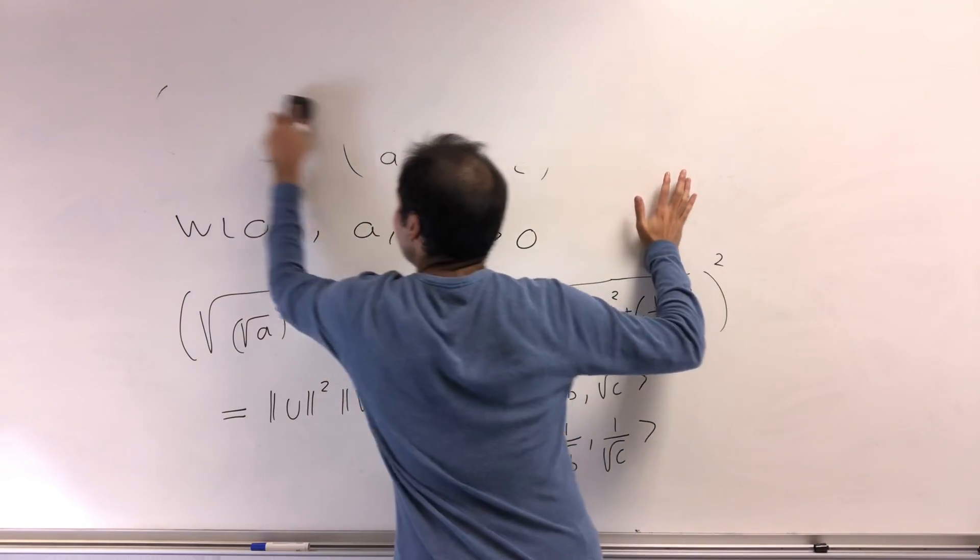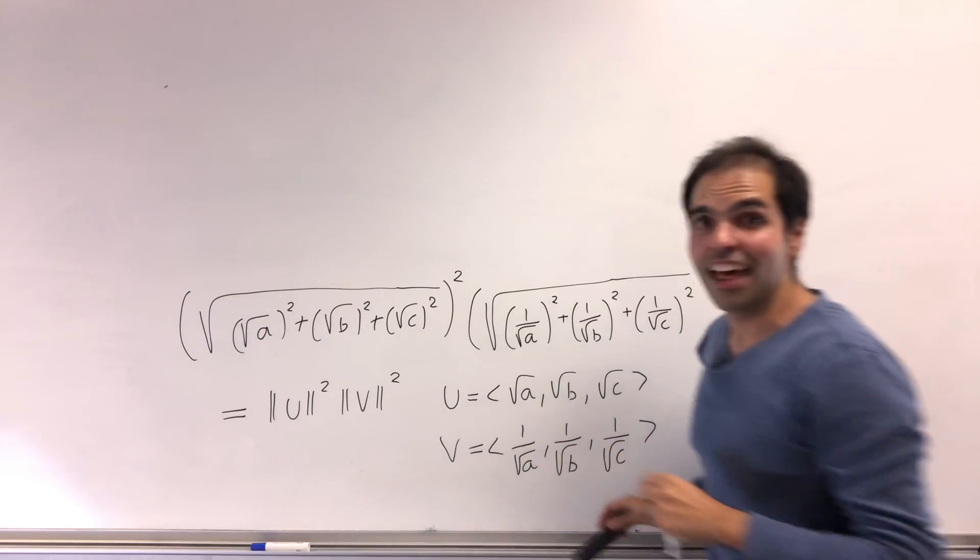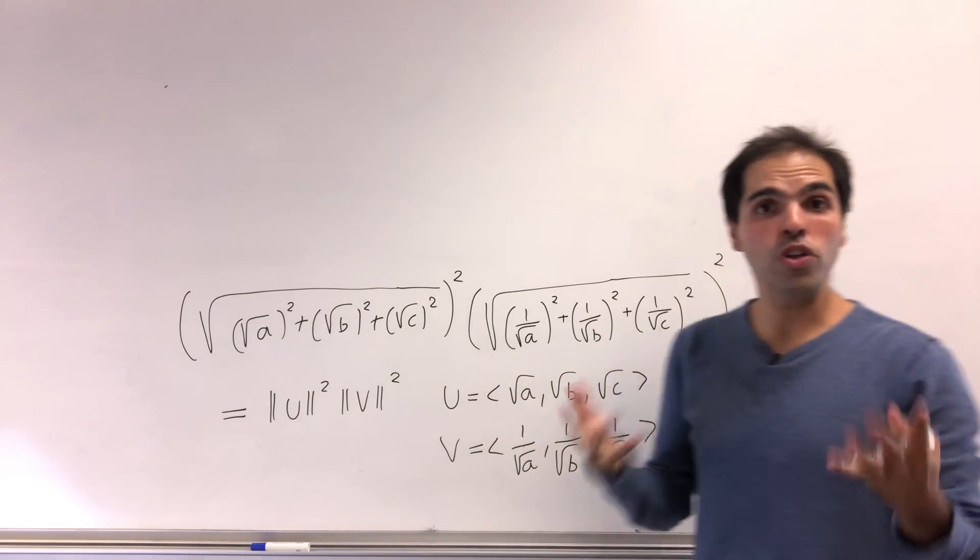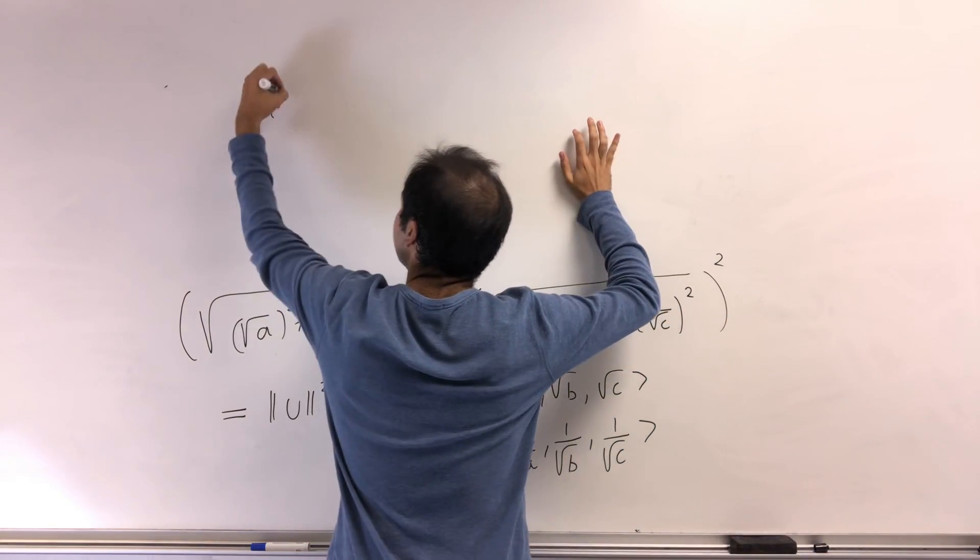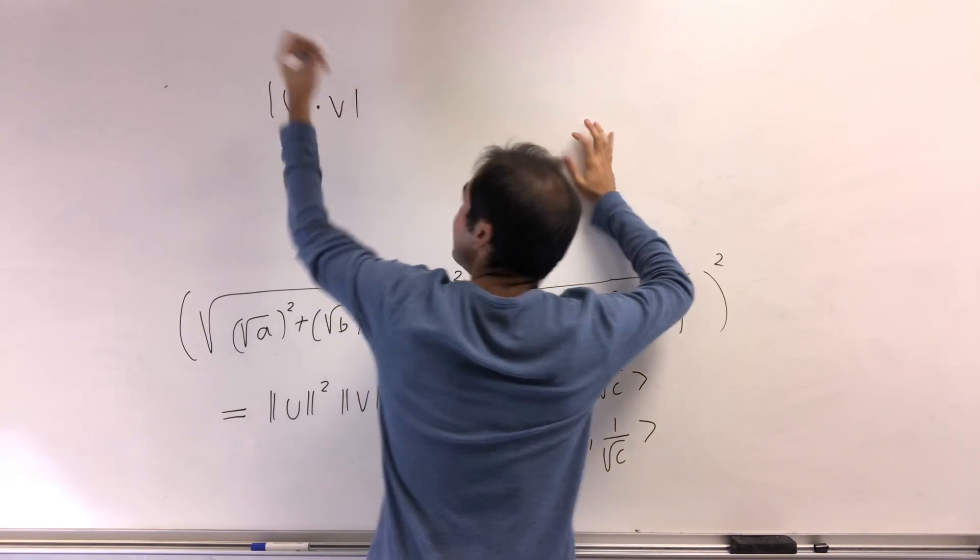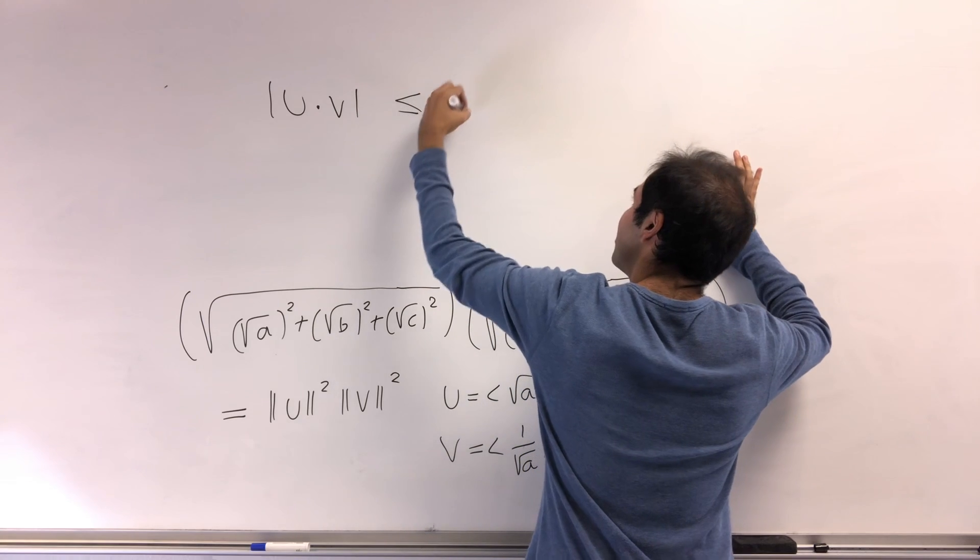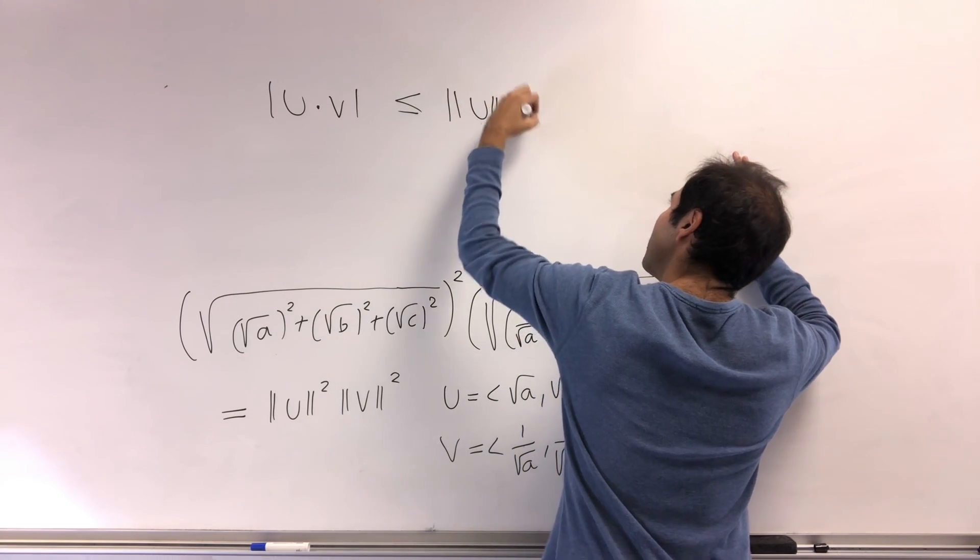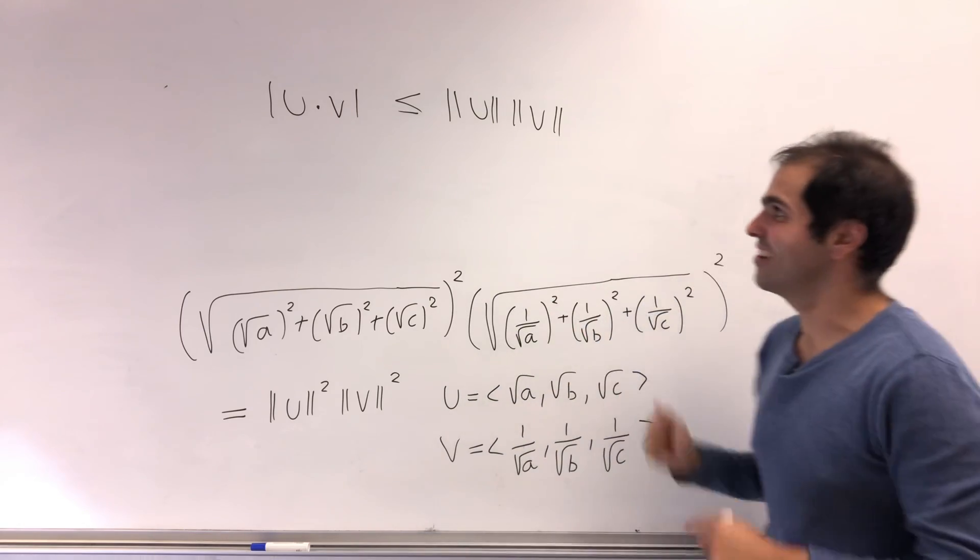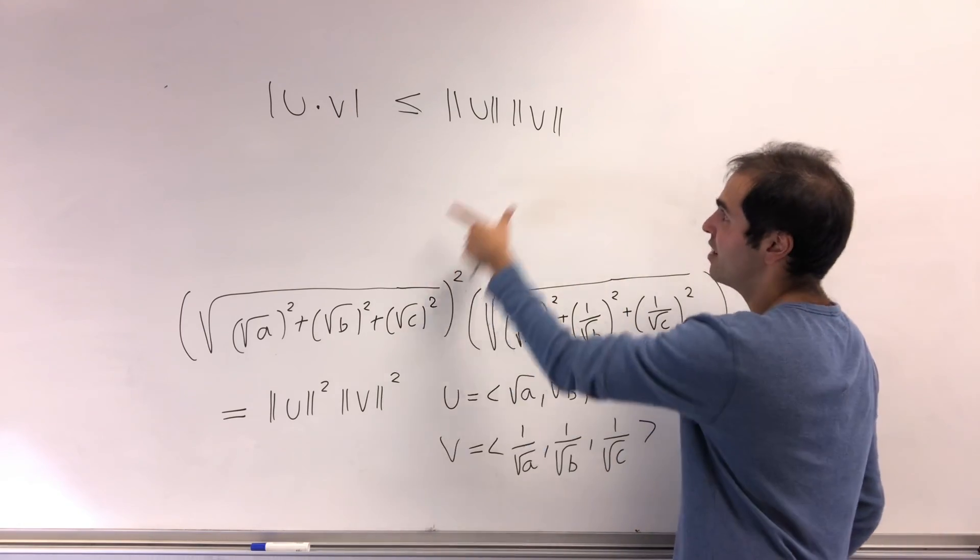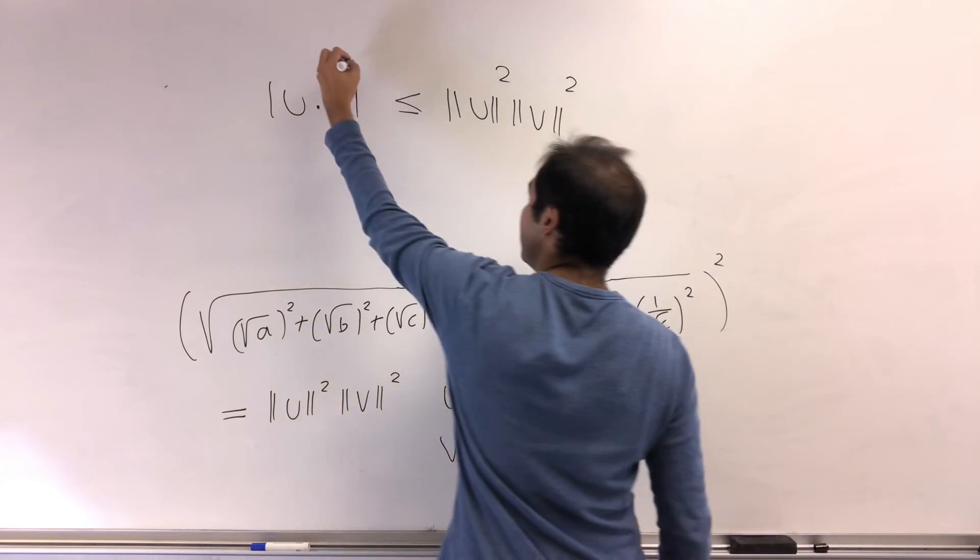But luckily there's a beautiful identity which relates dot products and lengths. And this is called the Cauchy-Schwarz-Bunyakovsky inequality, which simply says the magnitude or the absolute value of the dot product is less than or equal to the length of u times the length of v. By the way, there's a beautiful proof of this on my channel. And in particular, since we want length of u squared and length of v squared, we just square both sides.